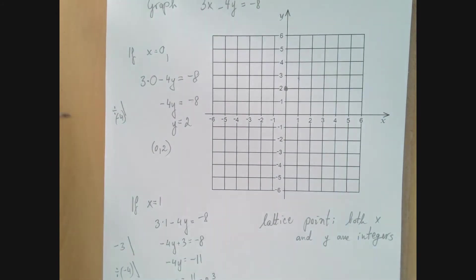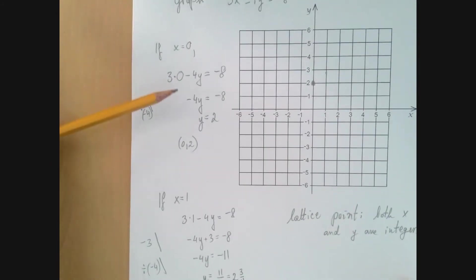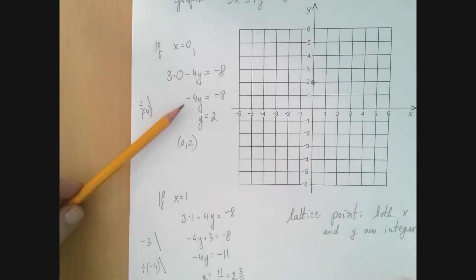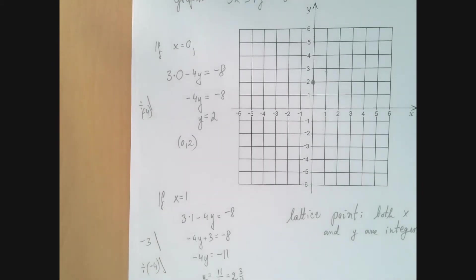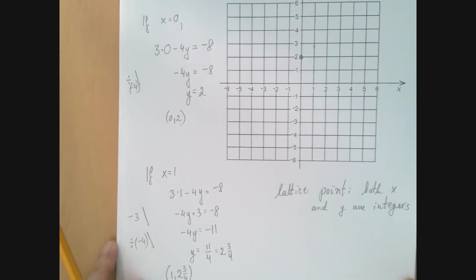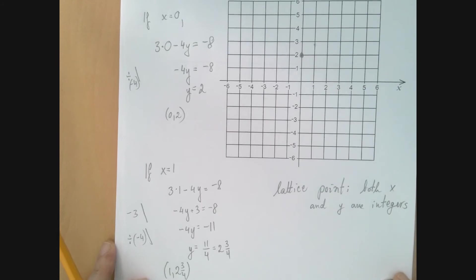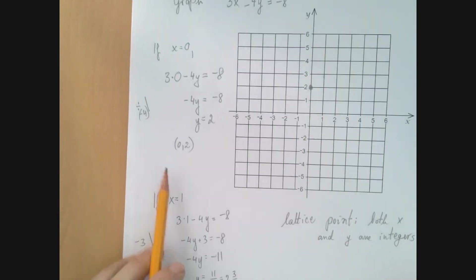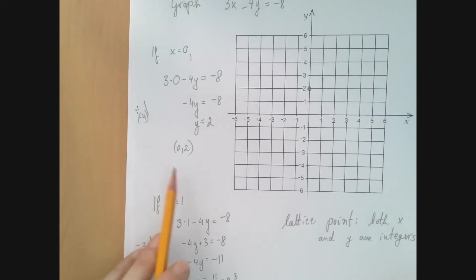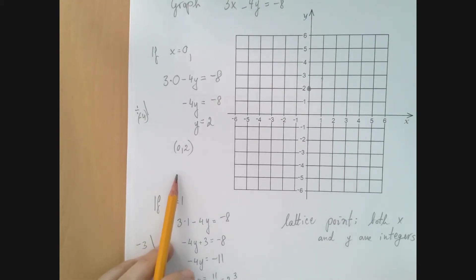So what went wrong? In both cases, when x was 0 and 1, we divided by negative 4. So whether we get an integer for y or not hinges on divisibility by 4. And what that means is that once we find a well-behaved number like 0, the next number that will behave well is when we add or subtract multiples of 4.